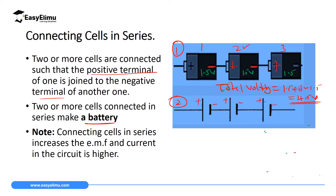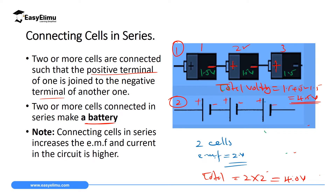Now if you are given two cells arranged in series, and each cell has an EMF of 2 volts, then the total voltage will be 2 times 2, which is going to be 4.0 volts. This means when you have cells in series, the total EMF should be the sum of the individual cells.